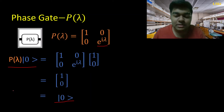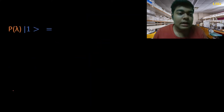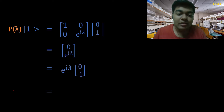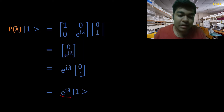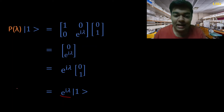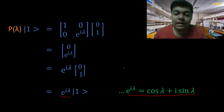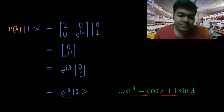Now let's apply the phase gate to |1⟩ and see if it has any effect. Substituting the matrix and the vector and carrying out the matrix multiplication, we can represent the result using Dirac notation. The e^(iλ) term has not vanished, so there is some importance to this gate. Note the identity: e^(iλ) can simply be written as cos(λ) + i·sin(λ).